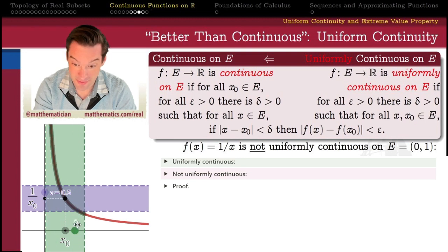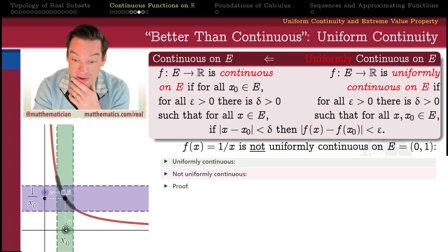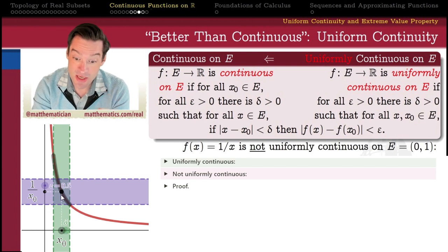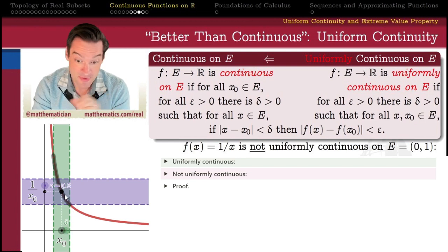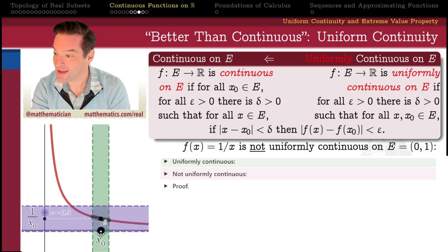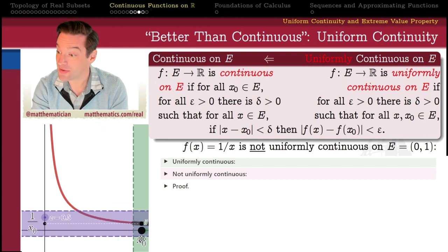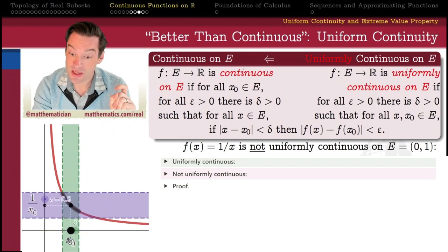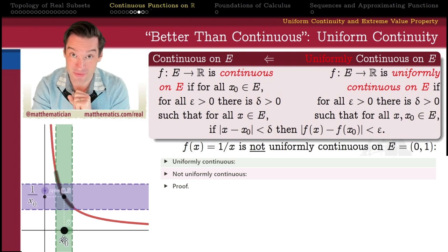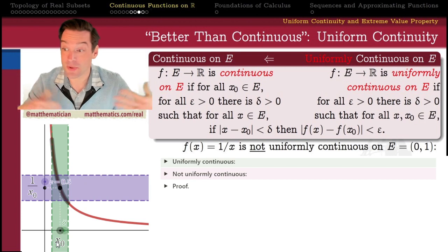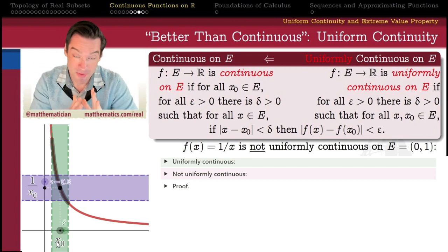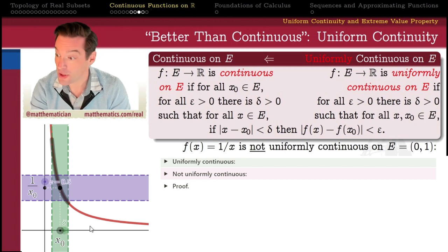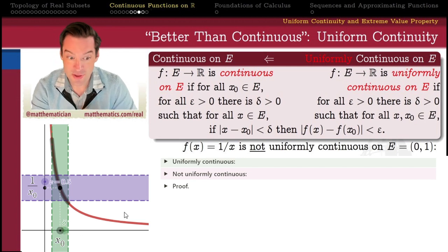Whatever delta I pick, there's some place on the open interval from 0 to 1 where there are x values that are delta-close to one another, whose images are not within epsilon of one another. In places where the slope of this graph is not very steep, it looks like it's easy to get the images of delta-close points to be epsilon-close. But once we start getting close enough to the vertical asymptote for f(x) = 1/x, the graph gets really, really steep, and it becomes really hard to get delta-close points to have epsilon-close images. So let's fill in the details to show that this plausibility argument actually carries some water.